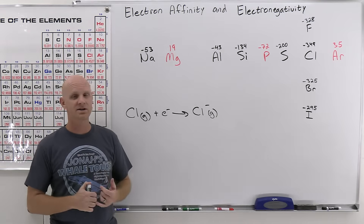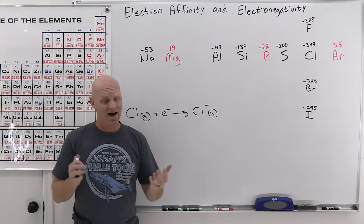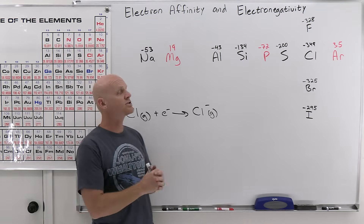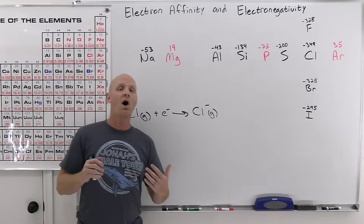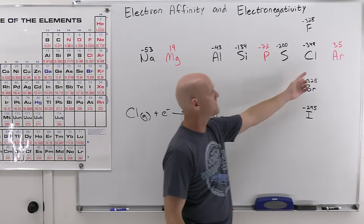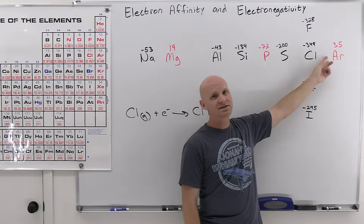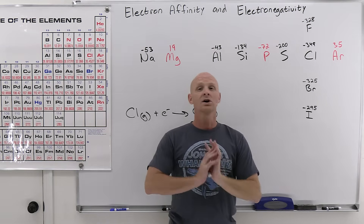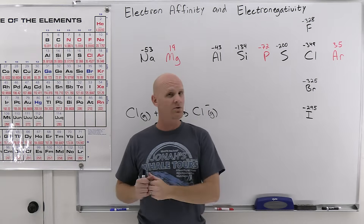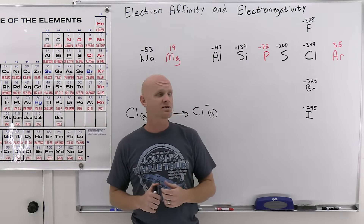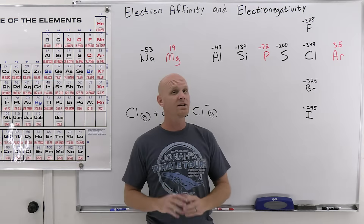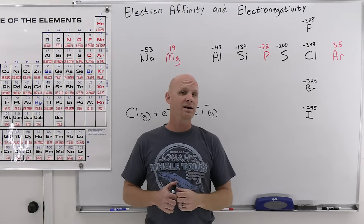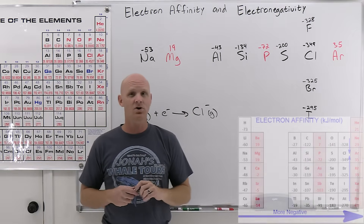You give chlorine an electron and it will shower you with energy — it's super happy to receive that electron. So you think, I'll go give one to argon. But argon doesn't want your electron — he punches you in the face, so to speak. Argon has a filled octet and does not want an electron. For ionization energy, the noble gases had a really high ionization energy, and here they don't want to gain one either. Notice argon actually has a positive electron affinity — that's typical for the noble gases.